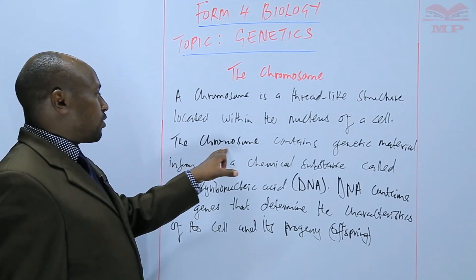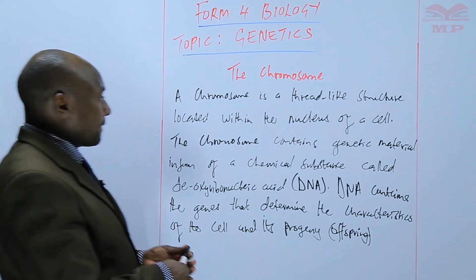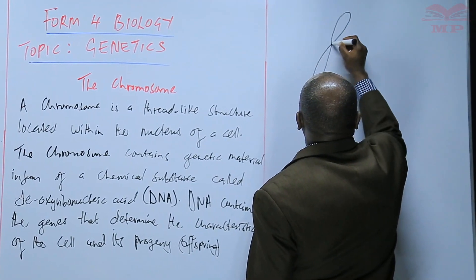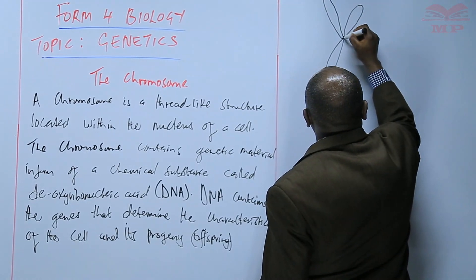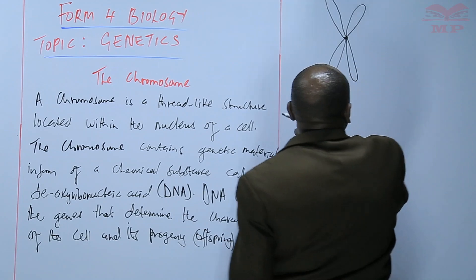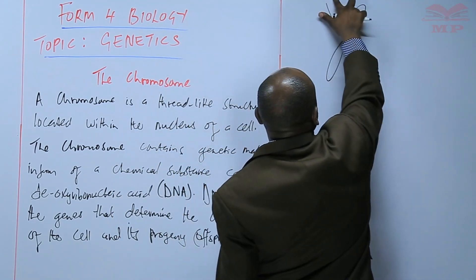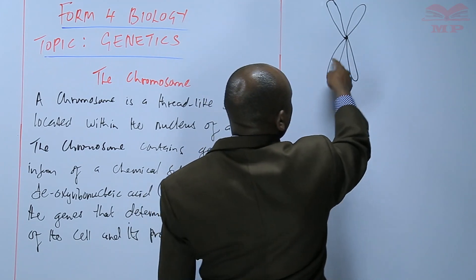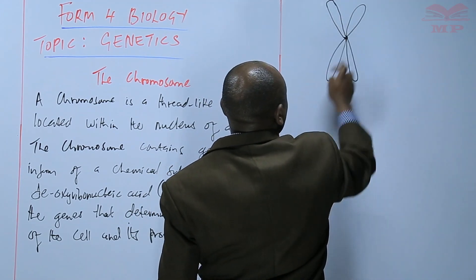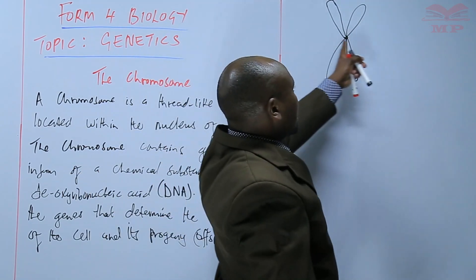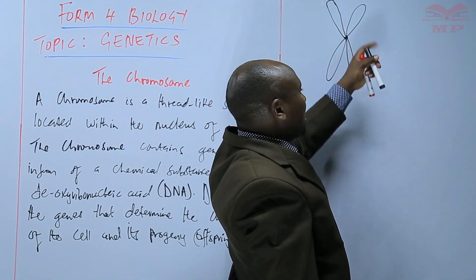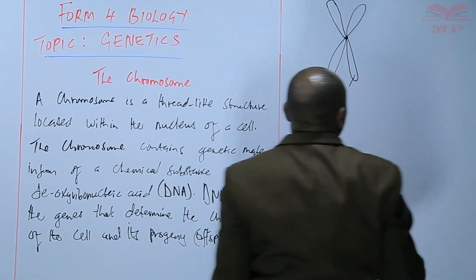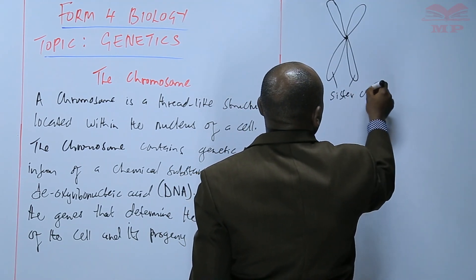We are going to look at the structure of a chromosome. A chromosome is made up of two parallel strands, and those strands we refer to as chromatids. We have one chromatid and another chromatid, and those two chromatids are joined at the center in a place that we call the centromere. We refer to them as being sister chromatids.